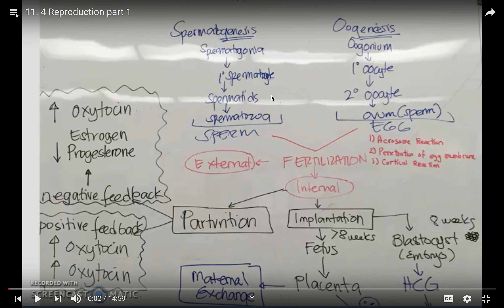Spermatogonia are small and increase in size to become primary spermatocytes. Looking at page 501 diagram: from outside to inside of the seminiferous tubule — oogonia on the outside, then primary spermatocyte, secondary spermatocyte, spermatids, then spermatozoa (sperm) on the inside.